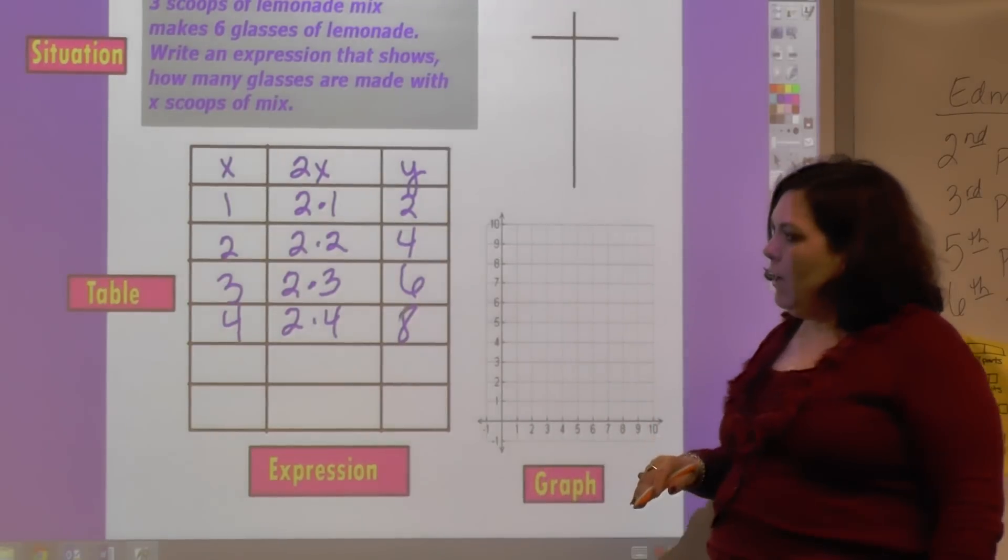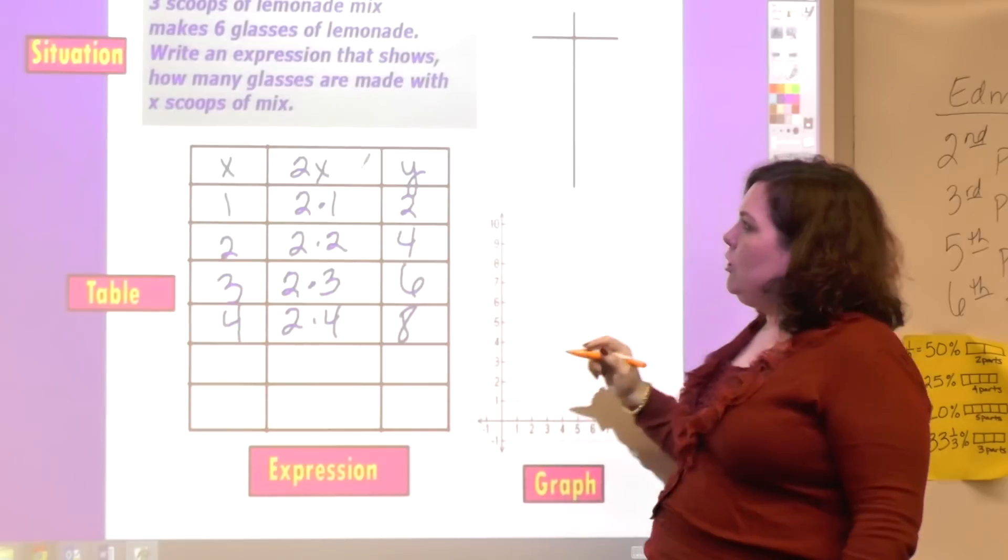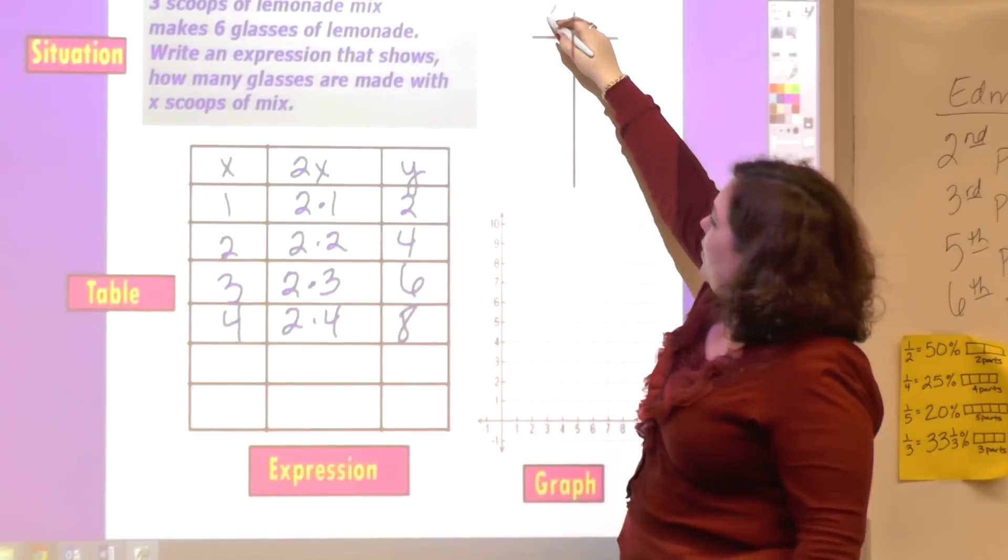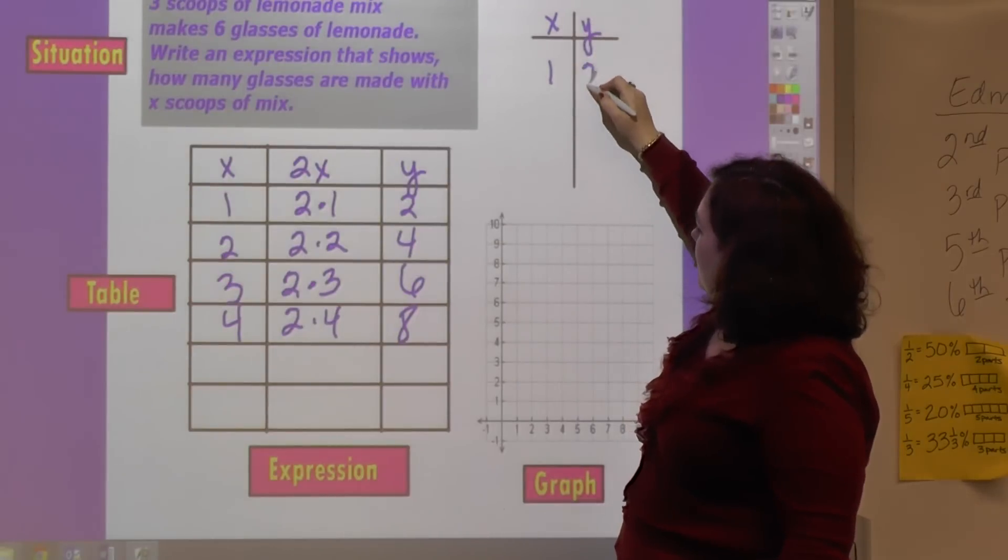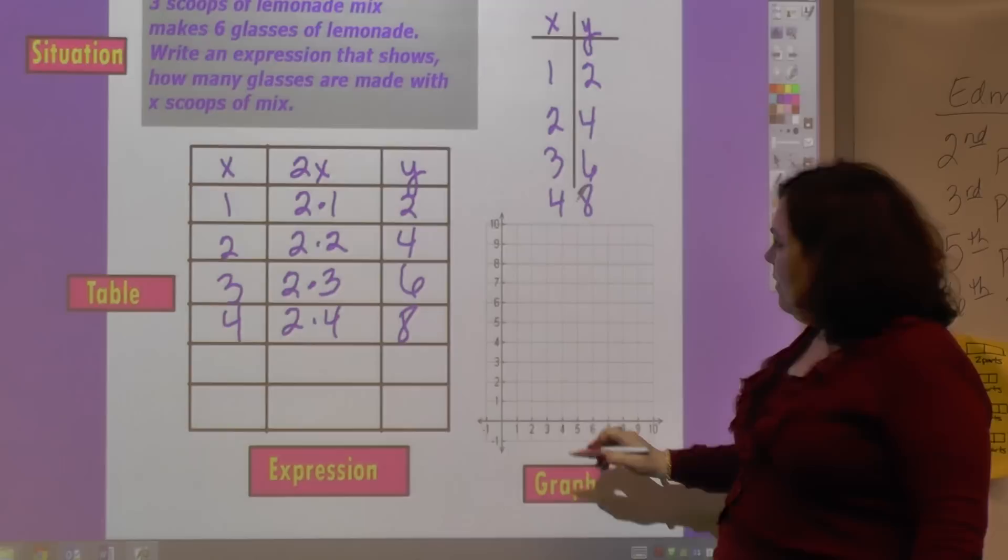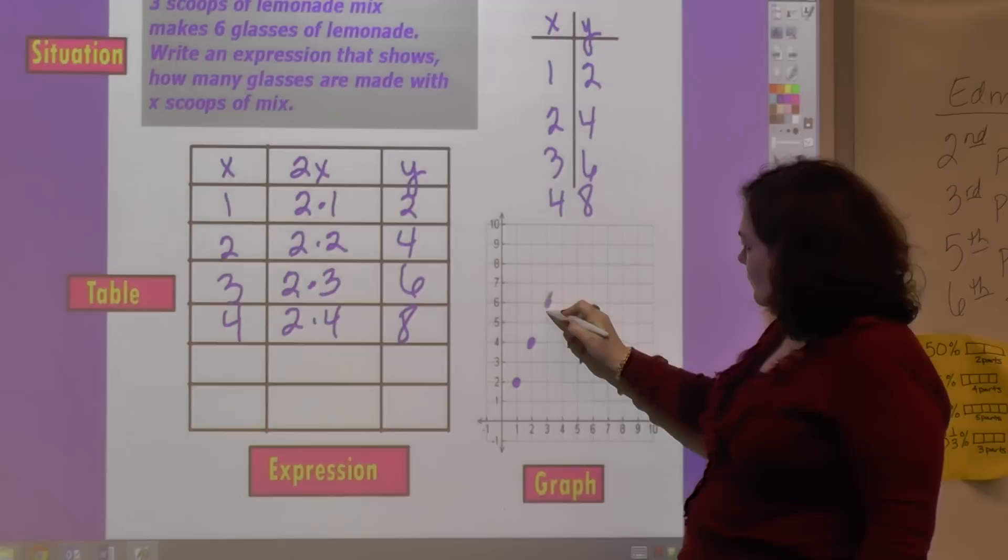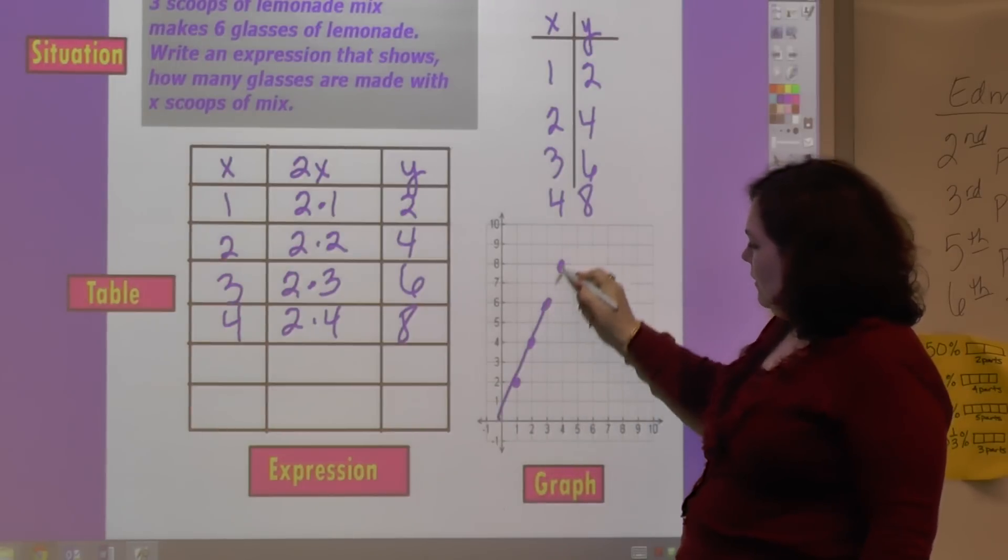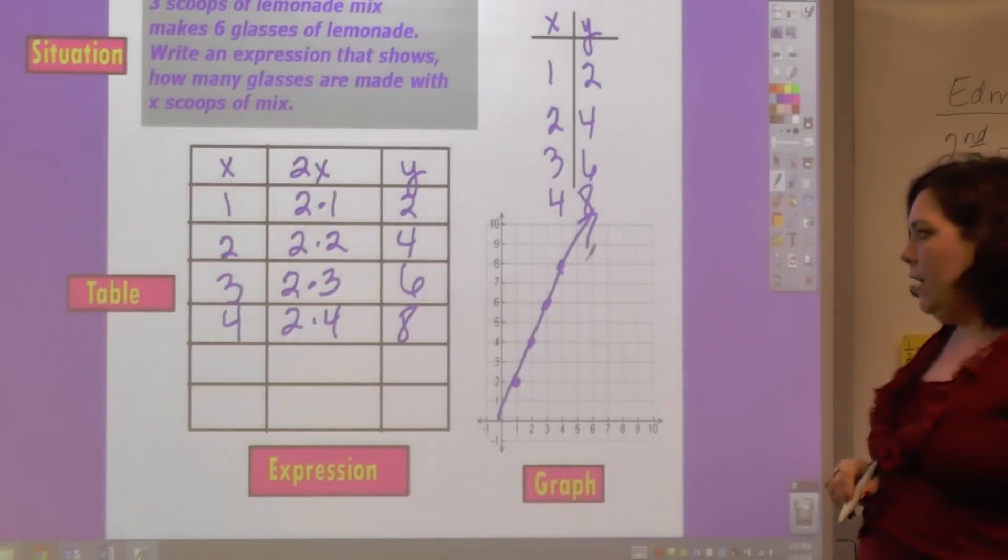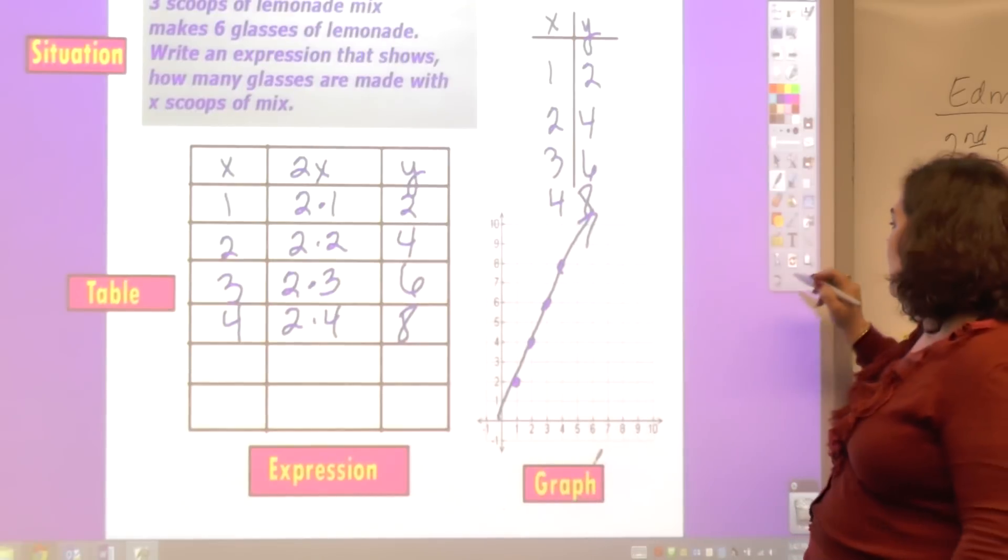I've got my situation, I've made my table. This is my expression, what's going on between X and Y. And now I'm going to plot my points: one and two, two and four, three and six, four and eight. Then I would put my points on the graph and make a nice straight line. And there you go. So the four, rule of four, one, two, three, four things.